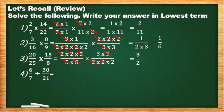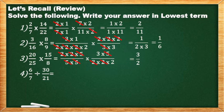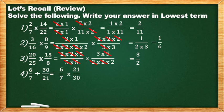Number 4: 6/7 divided by 30/21. Sa pag-divide ng fractions, we need to follow three steps. First, copy the dividend, which is 6/7 or the first fraction. Second, change the operation to times — instead na divide, gagawin na natin siyang times. Third step, reciprocal natin yung 30/21. Pag sinabi nating reciprocal, pagpalitin lang natin ang positions ng numerator and denominator. So mayayari: copy 6/7, change the sign to times, at magiging 21/30.